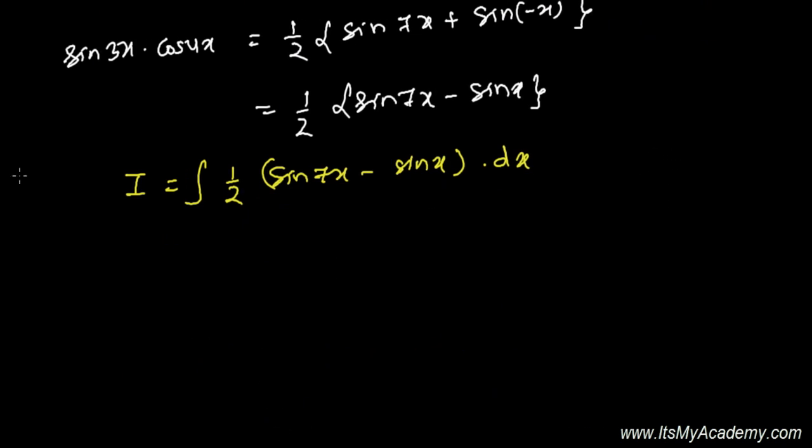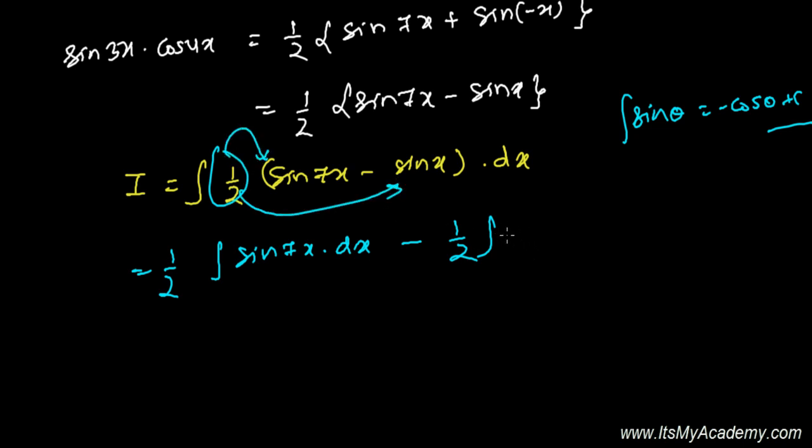And now we can easily solve this because we know our standard trigonometry formula of integration. That is, integration of sine theta is minus cosine theta plus constant, because derivative of minus cosine theta is sine theta. So now it's half outside. Integration of sine 7x with respect to x, and again, this half will multiply this one as well as this one.